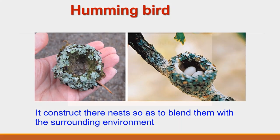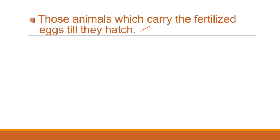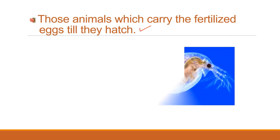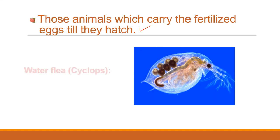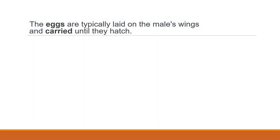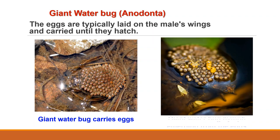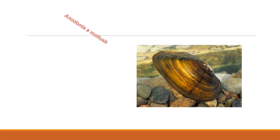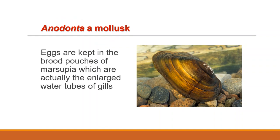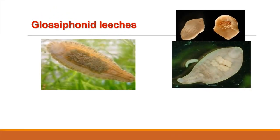Now let us see the third group of animals, which carry the fertilized eggs till they hatch. In case of the female water flea Cyclops, she carries her eggs in a pair of egg sacs projecting laterally. In case of the giant water bug Belostoma, the females glue their eggs on the back of the males. In case of female Anodonta, a mollusk, eggs are kept in brood pouches called marsupia, which are actually the enlarged water tubes of the gills. The glossy ferned leeches lay eggs in protected ootheca which remain attached to the ventral side of the body.